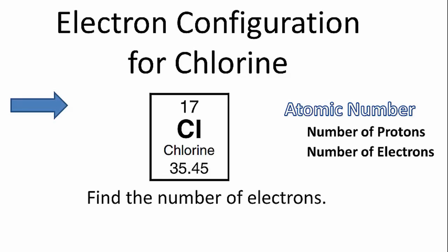To write the electron configuration for chlorine, we first need to determine the number of electrons in the chlorine atom. We can do this by looking on the periodic table at the atomic number.